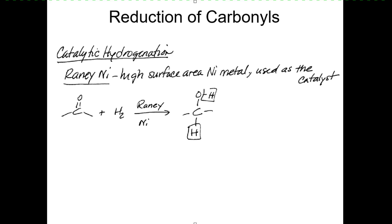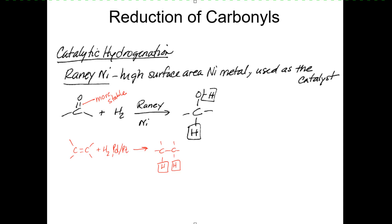Now we're going to move on to more preparations of alcohols by different kinds of reactions. One thing we could think about is reacting a carbonyl — a ketone or an aldehyde — with hydrogen, doing hydrogenation just like when we took a carbon-carbon double bond and added hydrogen over palladium or platinum metal. You could ask: can't you do that with a carbon-oxygen double bond to form an alcohol? The answer is yes, but the carbonyl is actually much more stable than a carbon-carbon double bond.